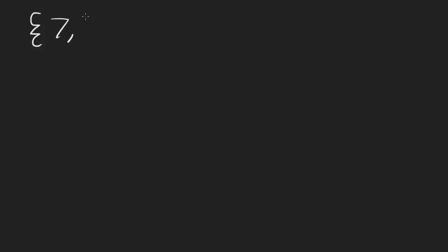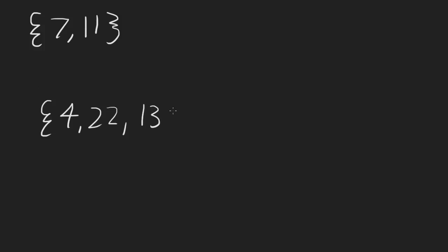Let's say we have the set {7, 11} and the set {4, 22, 13}, and we want to know which has a higher cardinality. Since these sets are so small, it's simple enough to count: the first set has 2 elements, the second has 3 elements, and since 3 is bigger than 2, the second set has a higher cardinality.